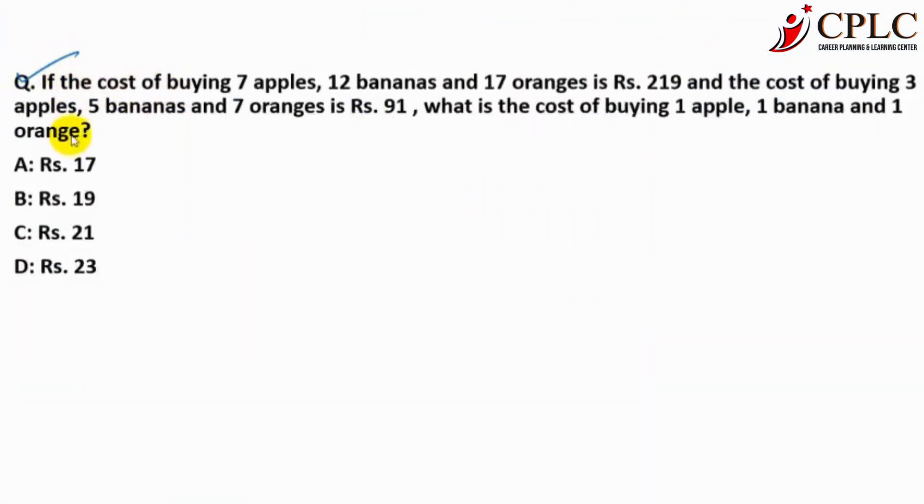Here is the question, based on linear equations. The cost of buying 7 apples, 12 bananas, and 17 oranges is rupees 219, and the cost of buying 3 apples, 5 bananas, and 7 oranges is rupees 91. You need to find out the cost of buying 1 apple, 1 banana, and 1 orange. Basically, this is a linear equation in three variables.